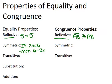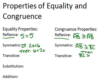Same thing for congruence. For example, if you have two segments and AB is congruent to BC, then it also has to be true that BC is congruent to AB. You can switch the order of that statement, and it has to also be true.